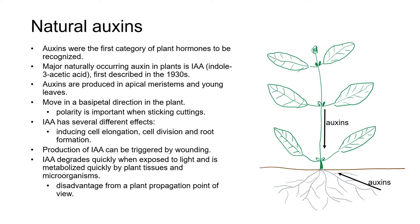The production of IAA can be triggered by wounding, such as the action of us as propagators removing a stem from a plant when we want to prepare cuttings. IAA degrades quickly when it's exposed to light and is also metabolized quickly by plant tissues and by microorganisms. This lack of longevity is a problem from a plant propagation point of view because we want the auxins to be present for quite a while in order to initiate roots.